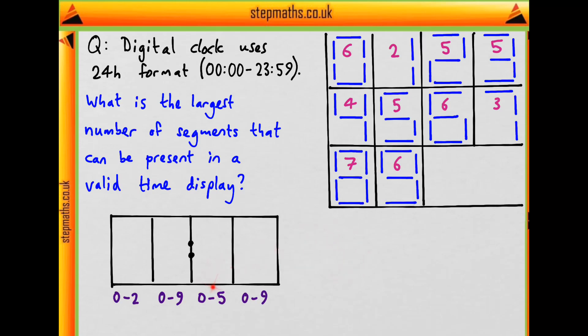Based on these restrictions, let's find the number with the largest number of segments that can go in each of these boxes. Between 0 and 2, which has the most segments? That's the 0. From 0 to 9, we know 8 is our maximum. Then from 0 to 5, it's the 0 with 6 segments. And again from 0 to 9 we choose 8.